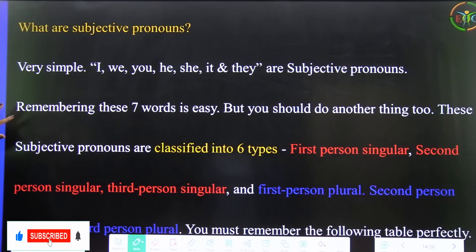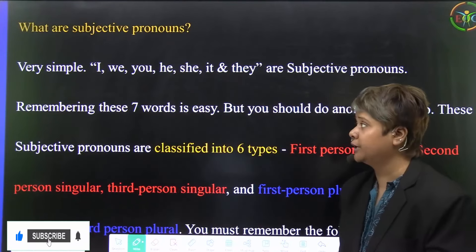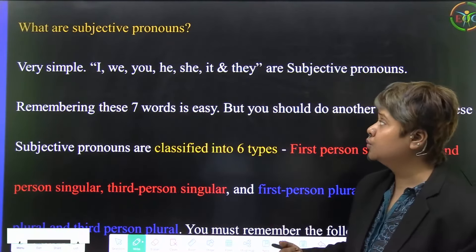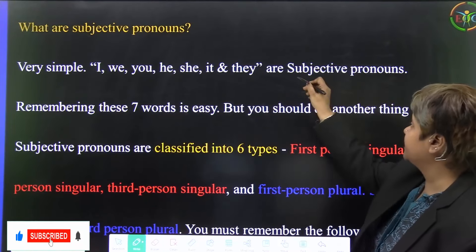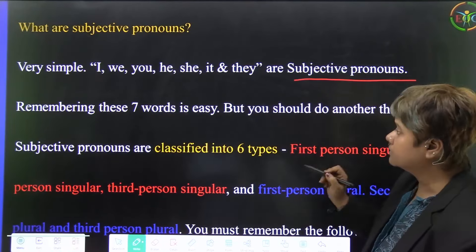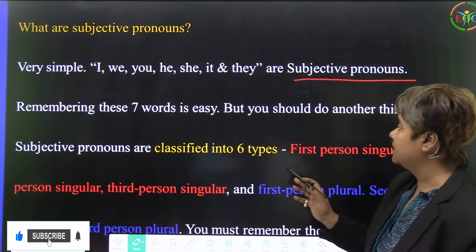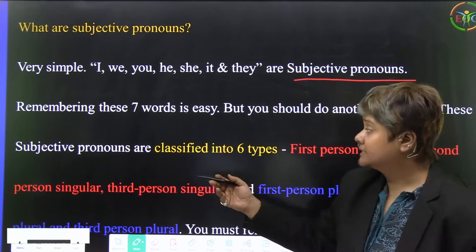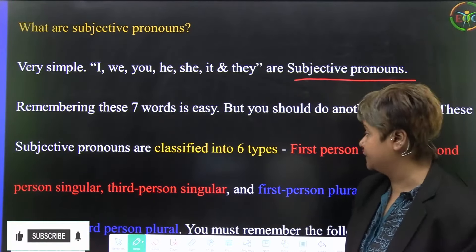To be brief about the definition: I, we, you, he, she, it, and they are subjective pronouns. These seven words are easy to remember. But you should also know that subjective pronouns are classified into six types.